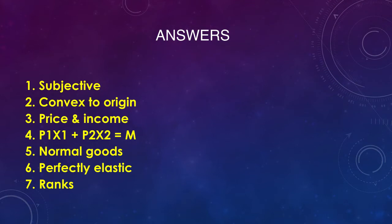Third answer: the consumption bundles available to the consumer depend upon price and income. The consumer will make a choice of the quantity of the commodity to buy depending on the price — if the price is high, he will buy less; if the price is less, he will buy more. Whether and how much of a commodity he buys will also depend upon his income, which is a constraining factor. Fourth answer: the equation of the budget line is option C — P1X1 + P2X2 = M.